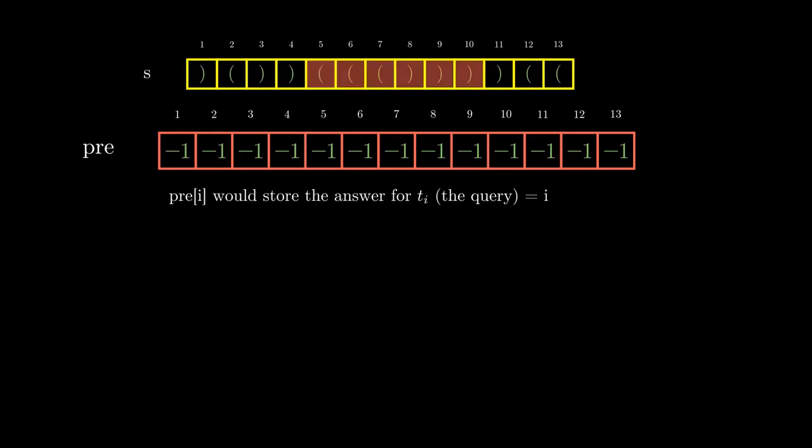Also, when you pop an index from the stack, in the pre array for that index you should set the value of the current closing bracket's index. So for example, when you are at index 10, you will be popping 5 off the stack because the closing bracket at 10 is the corresponding closing bracket for the opening bracket at index 5. So you would set pre[5] as 10.